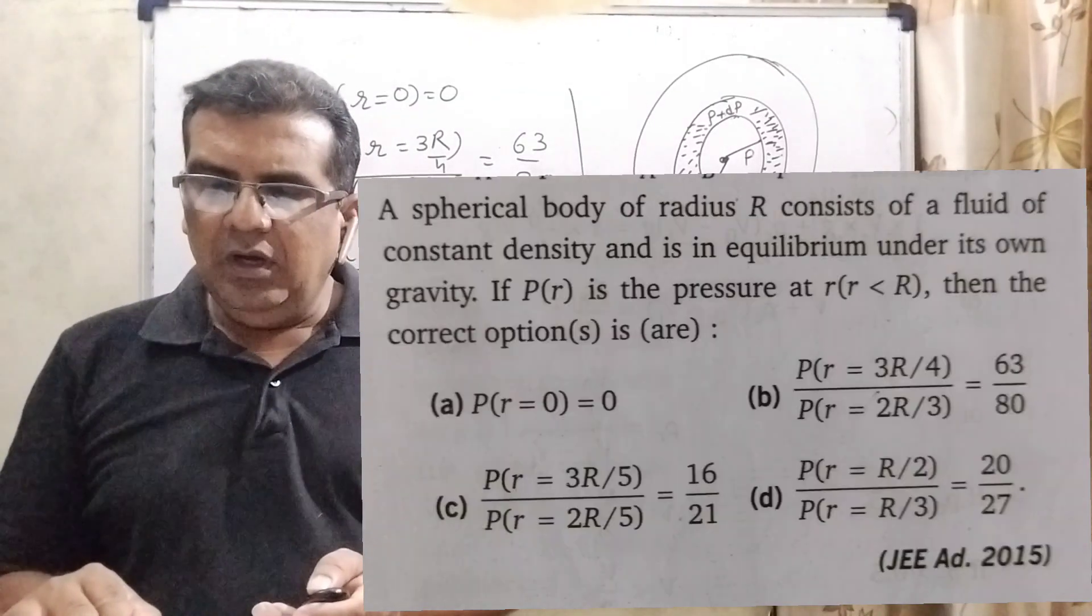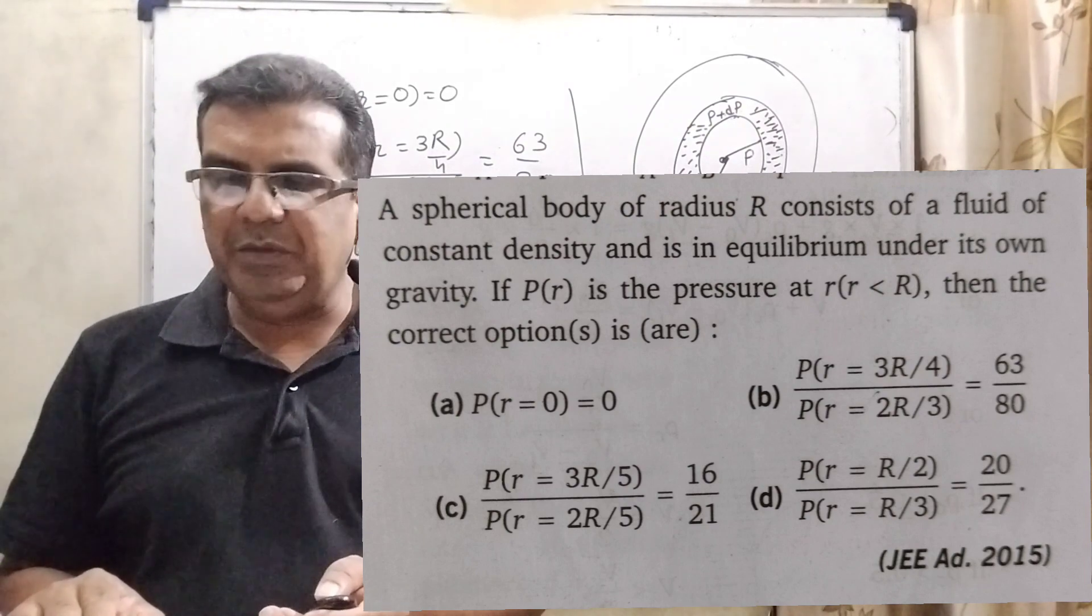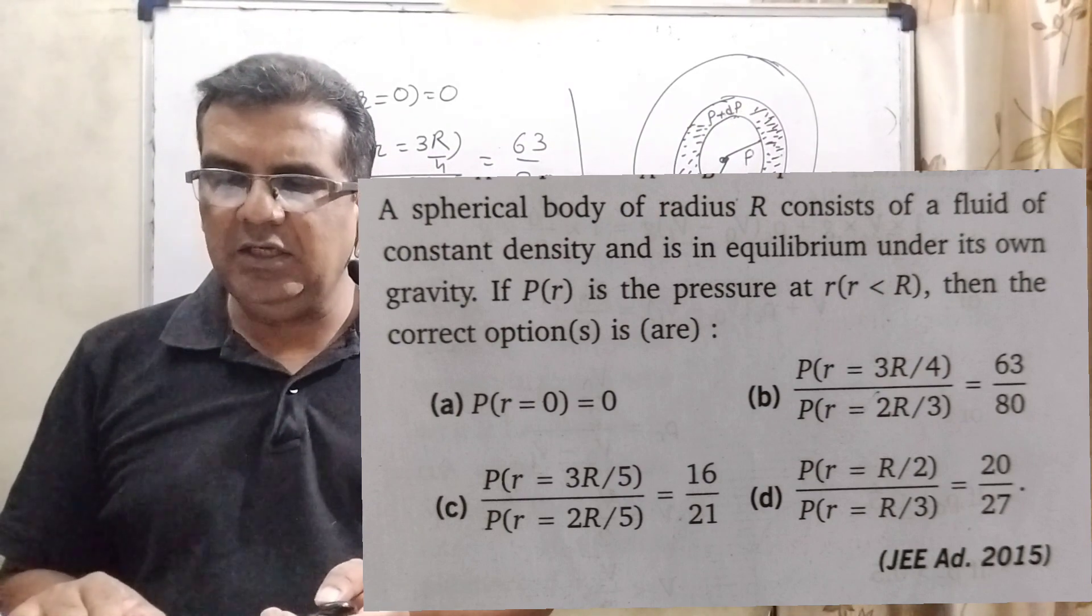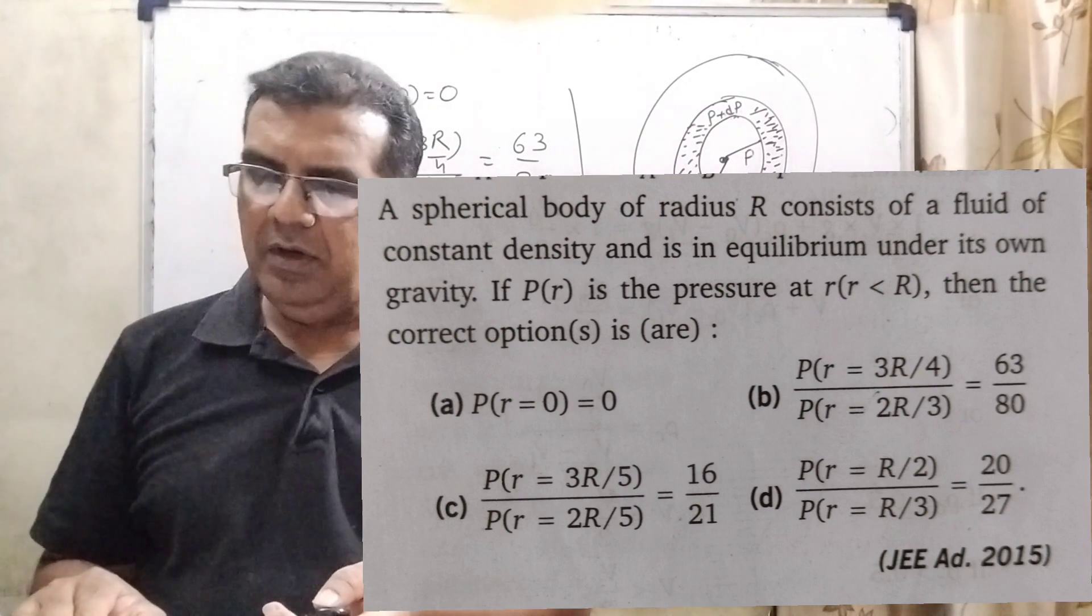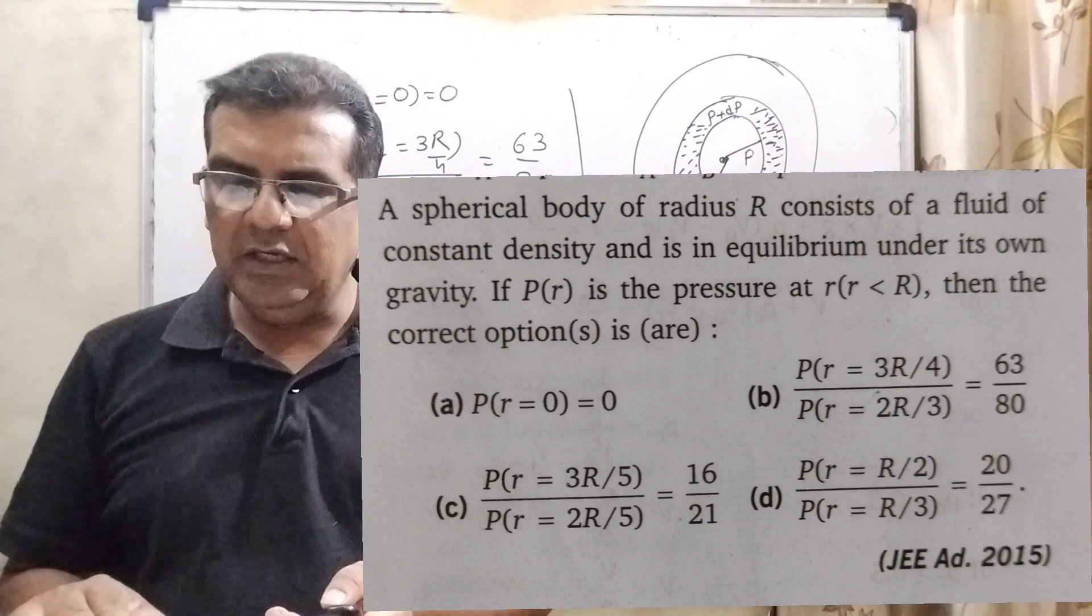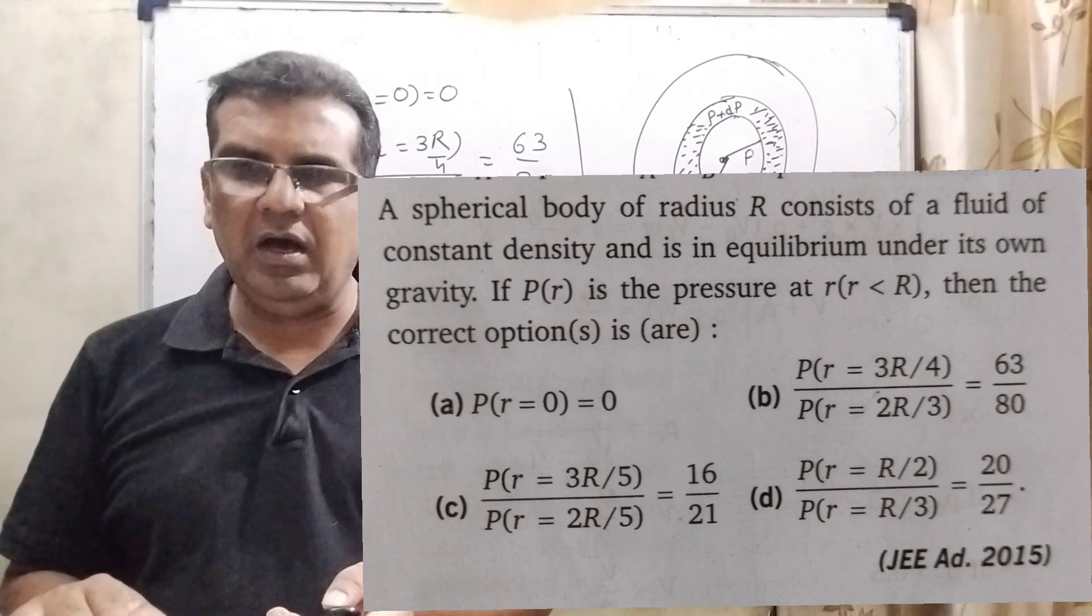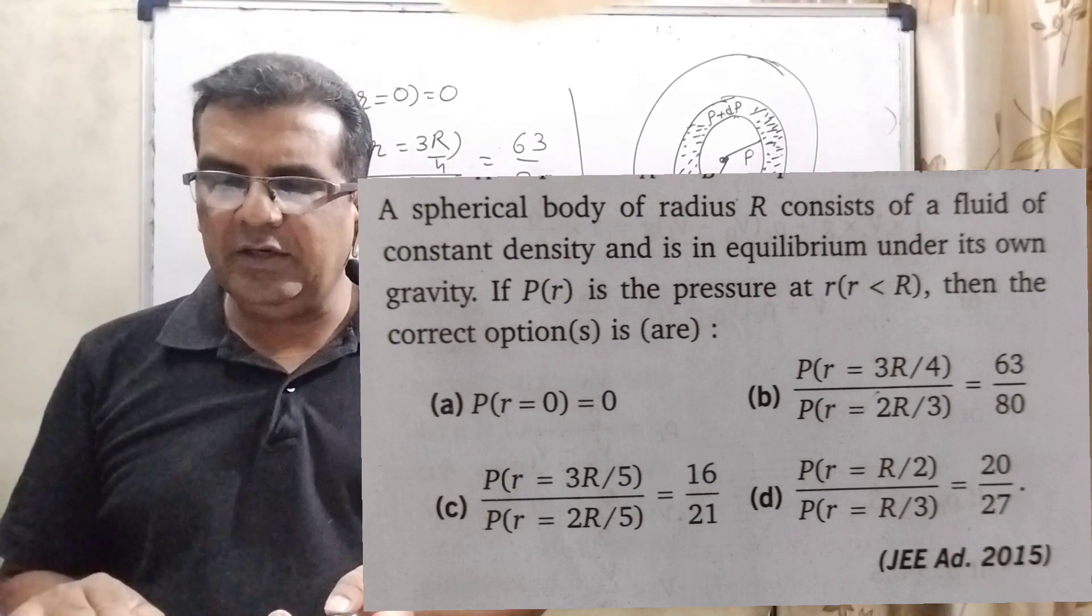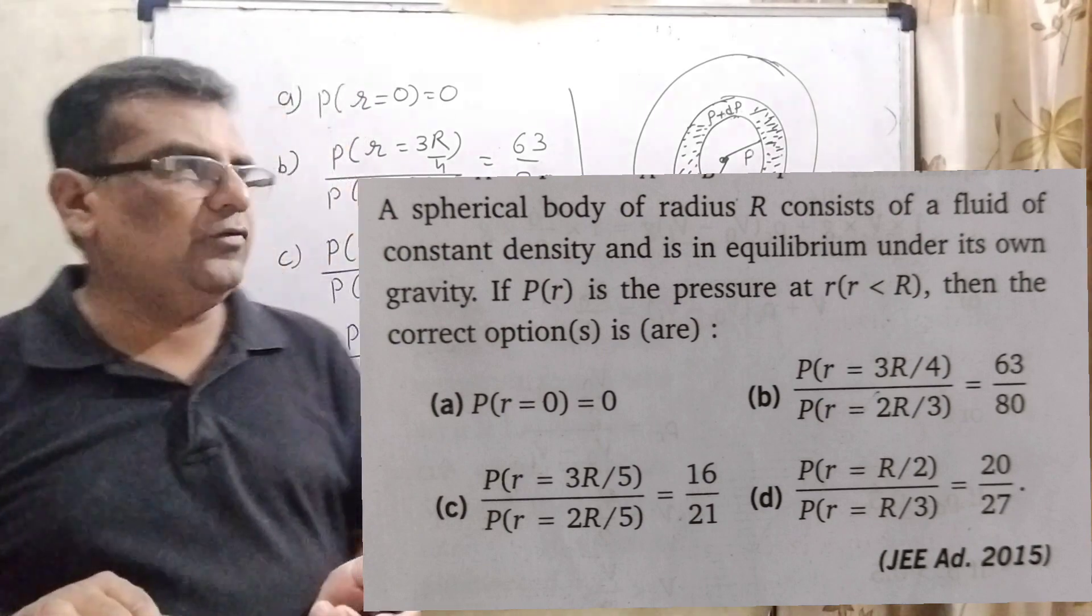Now the question here. A spherical body of radius capital R consists of a fluid of constant density and is in equilibrium under its own gravity. If P as a function of r is the pressure at small r, where small r is less than capital R, then the correct options are.